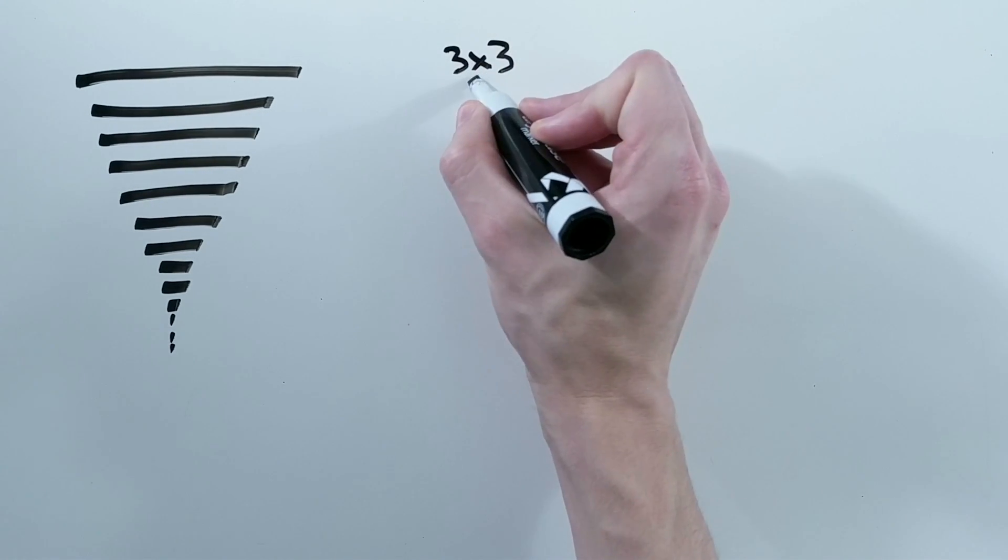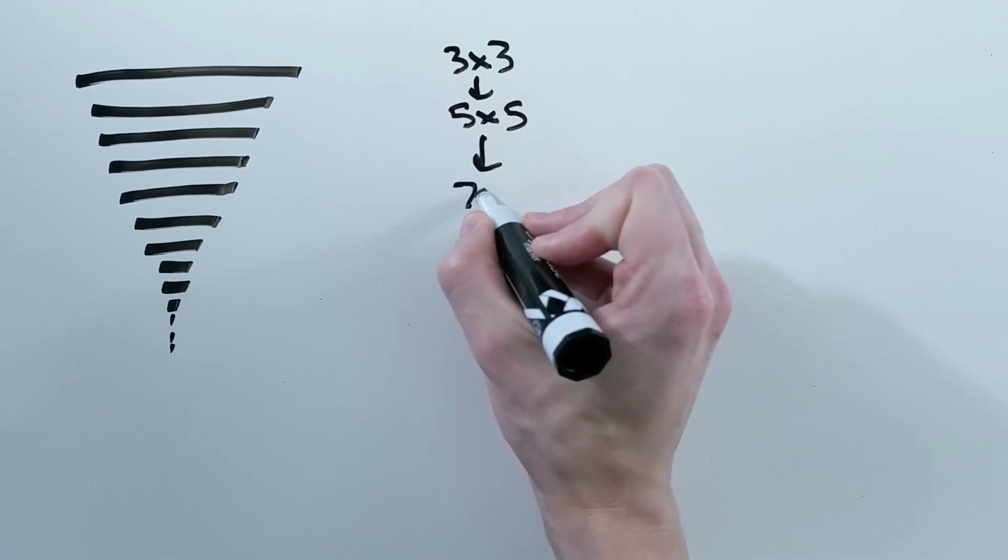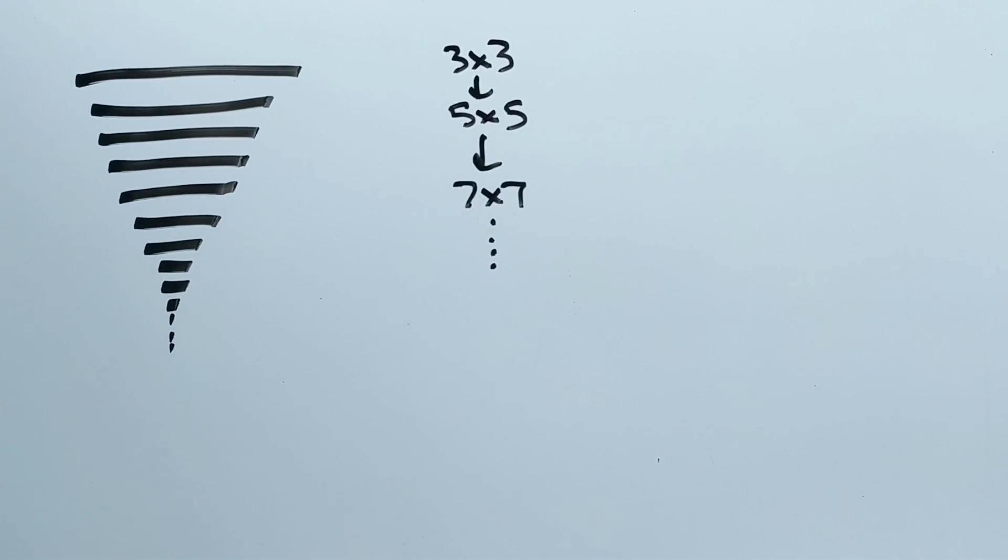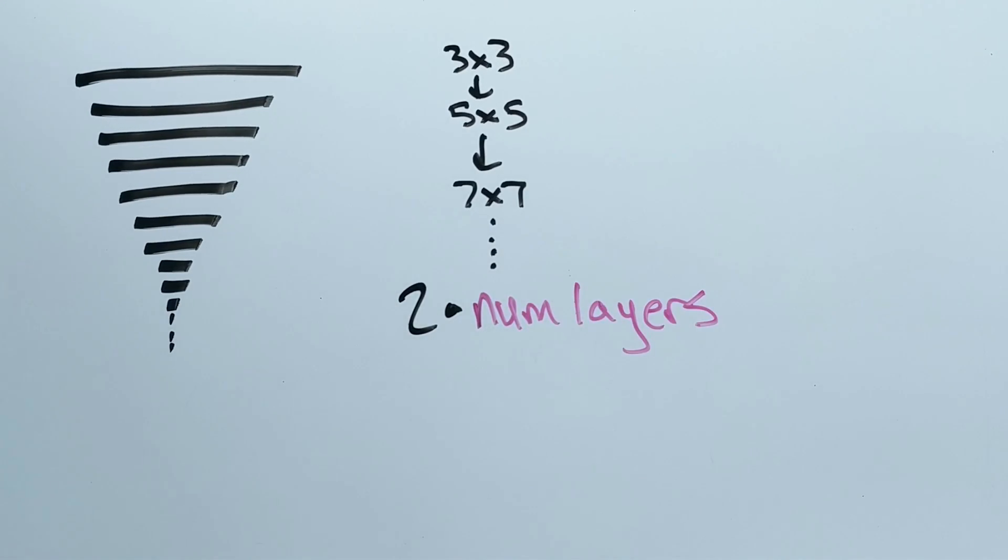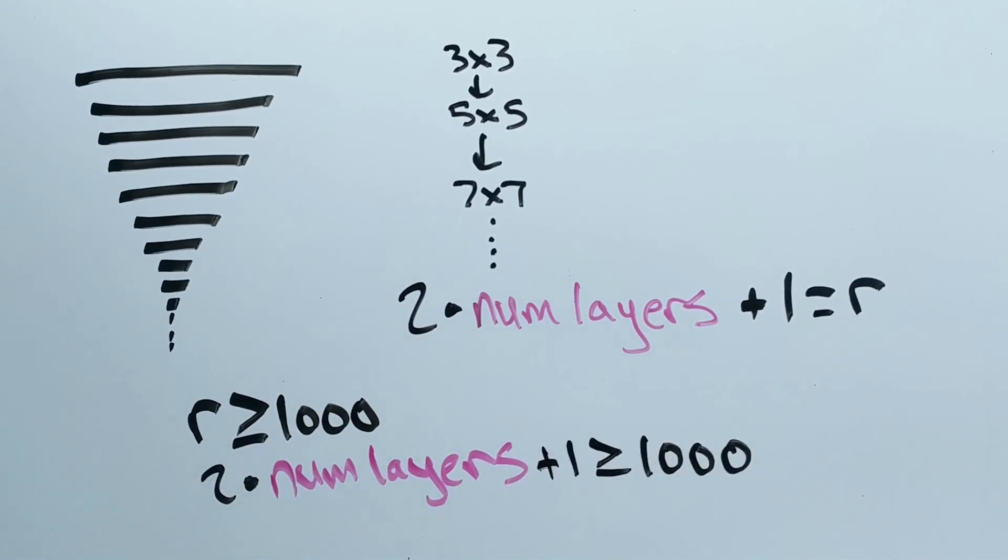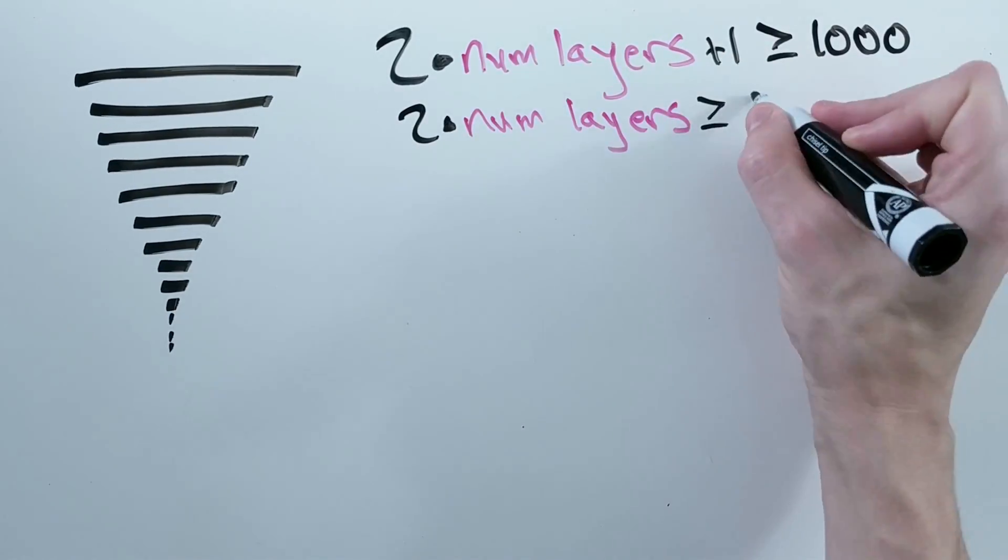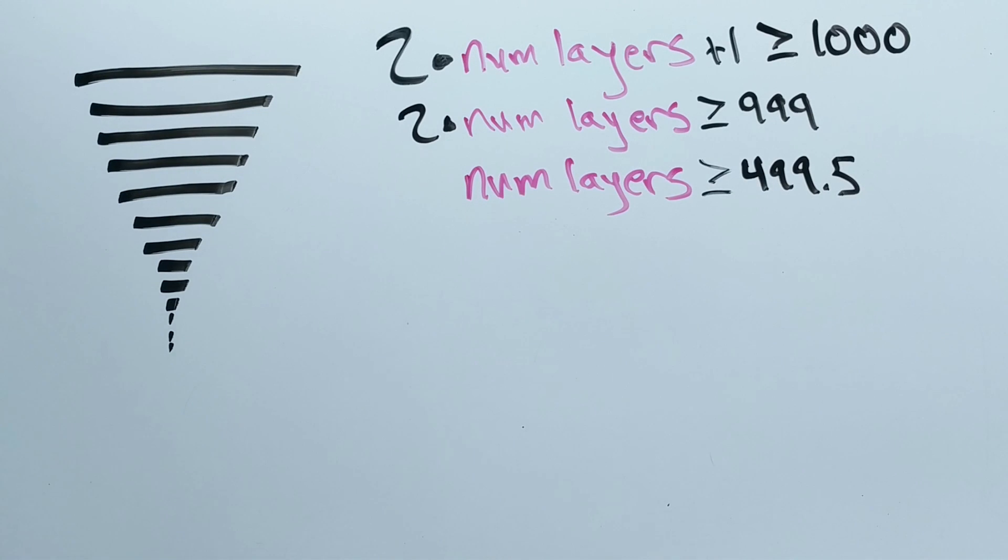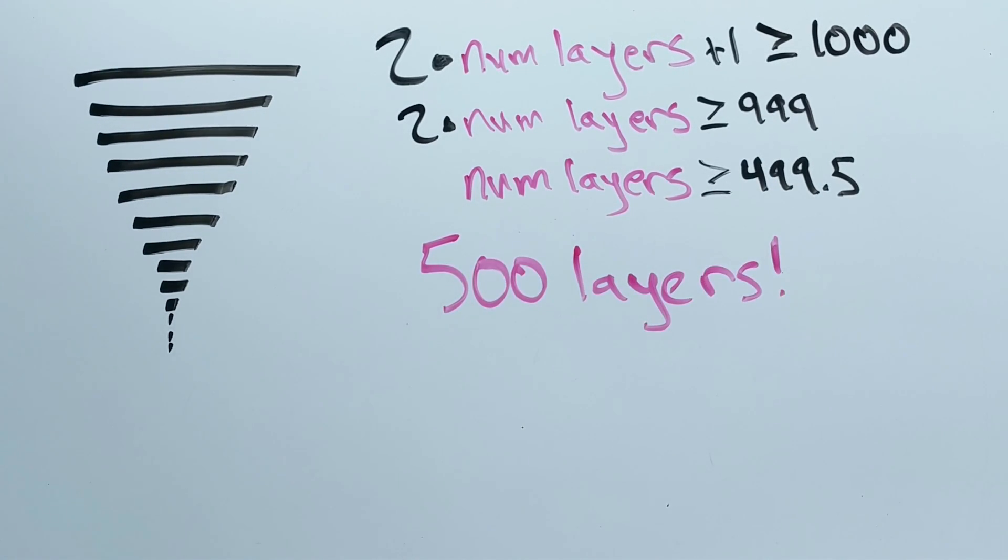Well, if the first layer looks at 3, and the second layer is 5, and the third 7, then our formula for calculating the receptive field is 2 times the number of layers plus 1. Plugging 1000 into our formula for the receptive field to cover the whole 1000x1000 image, we need 500 layers.